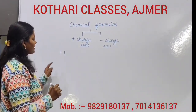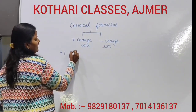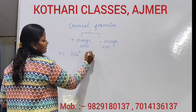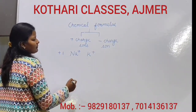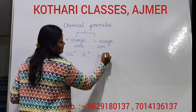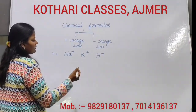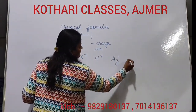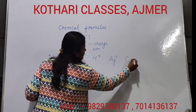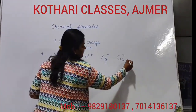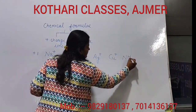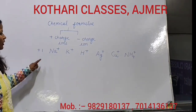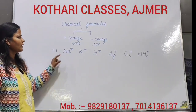Ions which have a plus 1 charge are as follows: Sodium with plus charge, Hydrogen also with plus charge, Silver, Copper, and Ammonium. These all have a plus 1 charge.